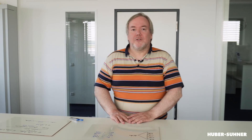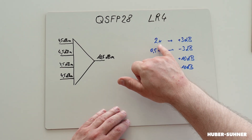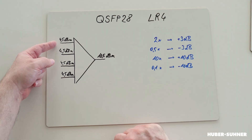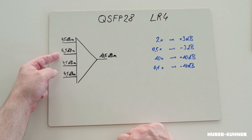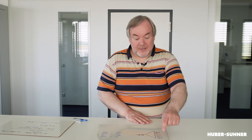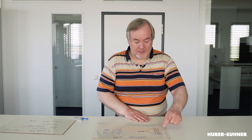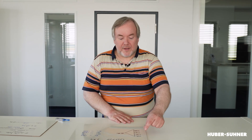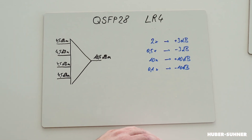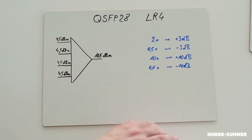But there's a simpler way — a rule of thumb: if you double the power, you add plus 3 dB. Taking this example, 4.5 dBm plus 4.5 dBm adds up to 4.5 dBm plus 3 dBm, meaning the sum of those two lasers is 7.5 dBm. The same applies to the two bottom lasers: 7.5 dBm plus 7.5 dBm — doubling again means adding 3 dB — so 7.5 dBm plus 3 dBm equals 10.5 dBm.